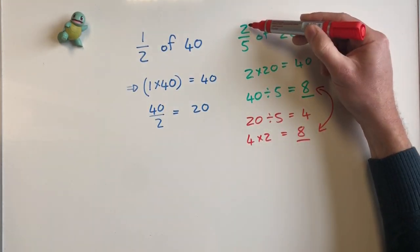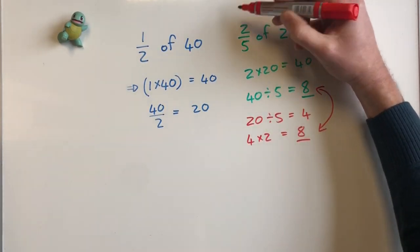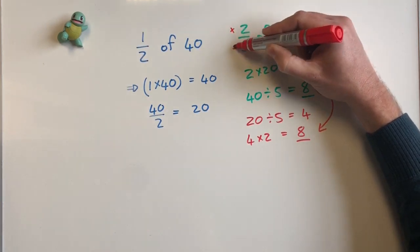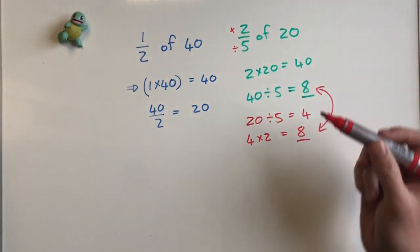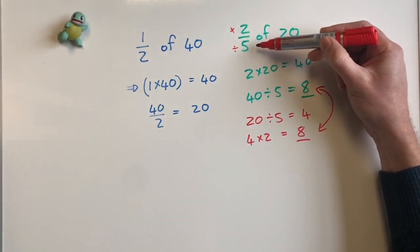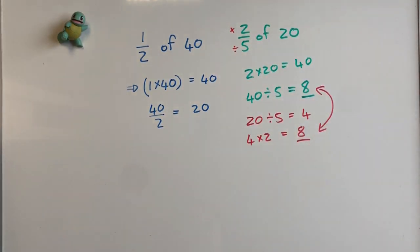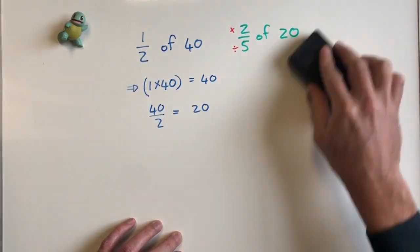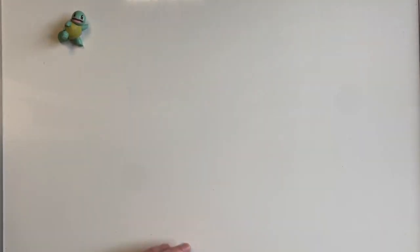These are both the same. I can multiply first, but I multiply with the top and I divide with the bottom. So multiply by the numerator and divide by the denominator.